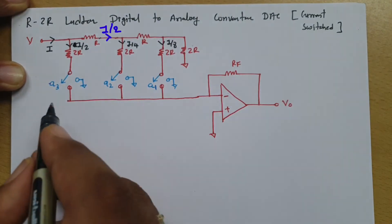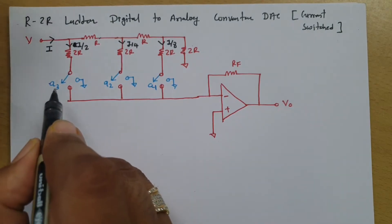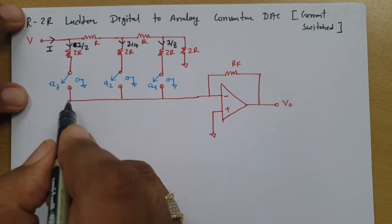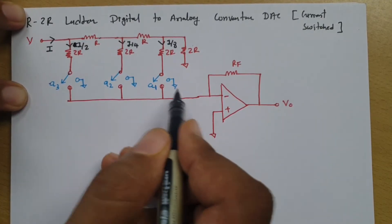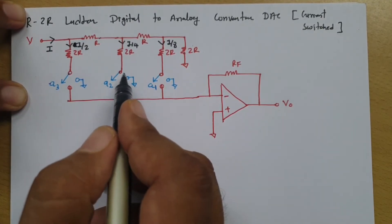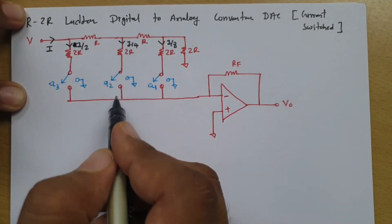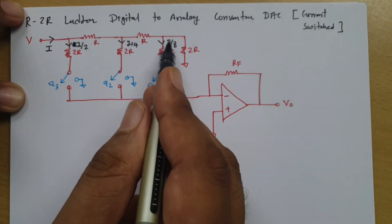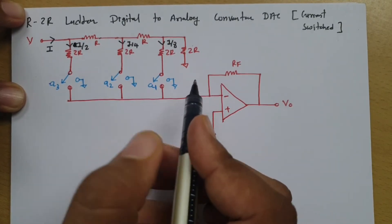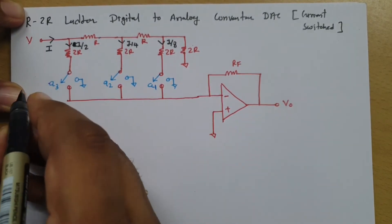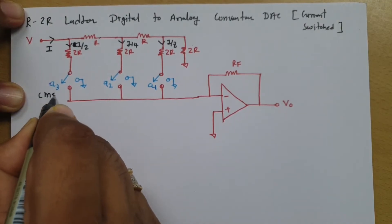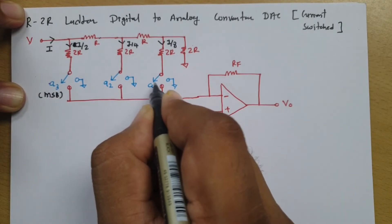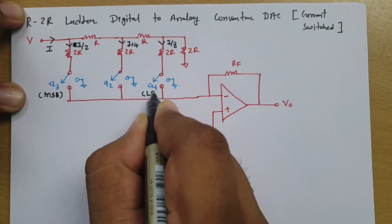When switch A3 is on, I/2 current comes to the output. When switch A2 is on, I/4 current comes. When switch A1 is on, I/8 current comes. So A3 is the MSB (most significant bit) and A1 is the LSB (least significant bit).